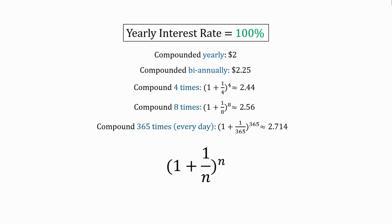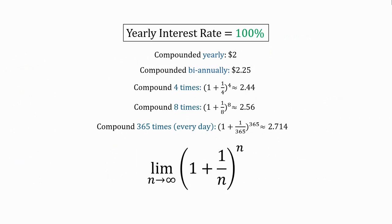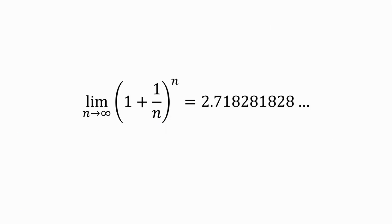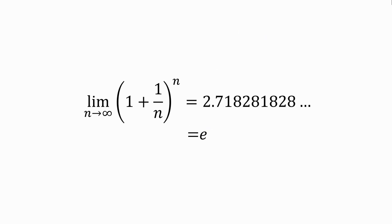If we keep compounding to bigger and bigger numbers, what we're doing is essentially taking the limit to infinity. We eventually get, when we take that limit, 2.718281828 and it goes on — which is just Euler's number.